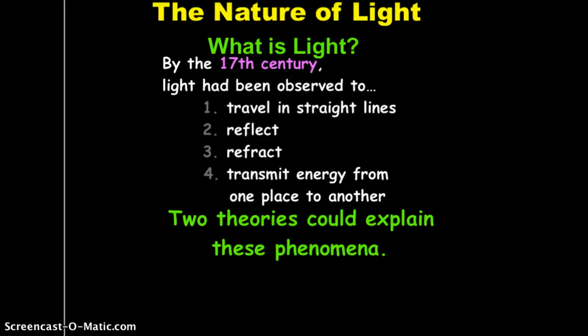Well, by the 17th century, we have figured out that light had been observed to do the following. It could travel in straight lines. It could be reflected. It could be refracted. And we knew that light also carried energy from one point to another.